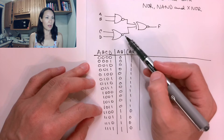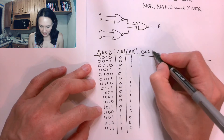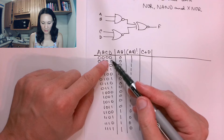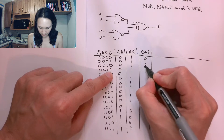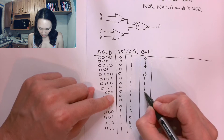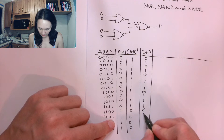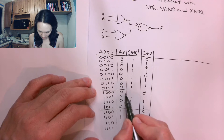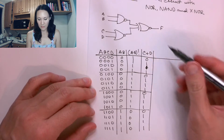Now let's do the same thing for the bottom branch. This is going to be an OR, and then the output of that OR gets negated to give us the NOR. So first if we do C OR D, I just have to look at these second two input columns. 0 OR 0 is 0. 0 OR 1 is 1. 0 OR 0 is 0. 0 OR 1 is 1. 1 OR 0 is 1. 0 OR 1 is 1. 1 OR 0 is 1. 1 OR 1 is 1. 0 OR 0 is 0. 0 OR 1 is 1. 1 OR 0 is 1. 1 OR 1 is 1. 0 OR 0 is 0. 0 OR 1 is 1. 1 OR 1 is 1. So that's C OR D.